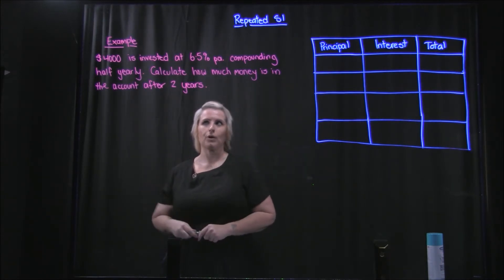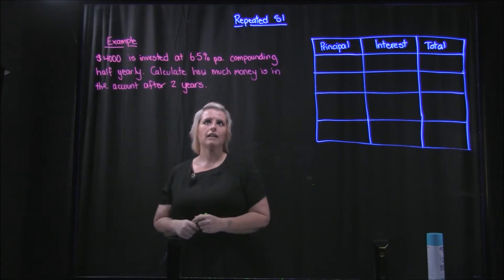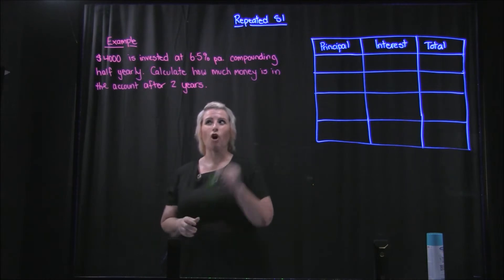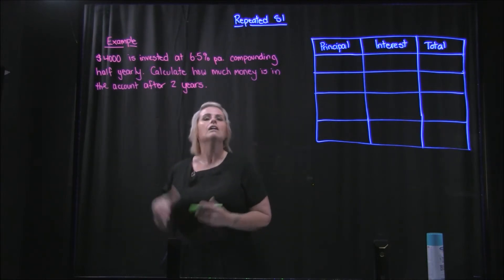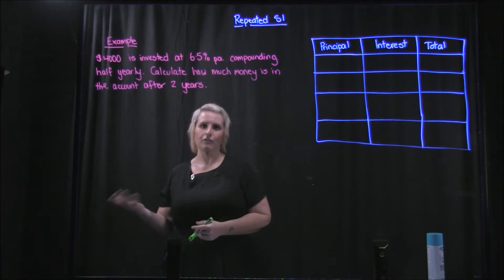So if I invested $4000 in a bank account at 6.5% and it compounds half yearly, it wants me to calculate how much money I would have in the account after two years.